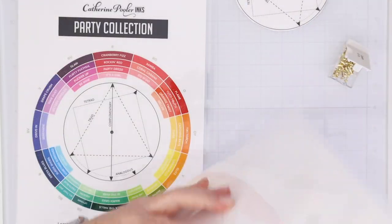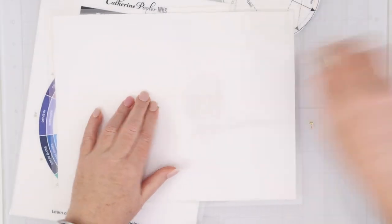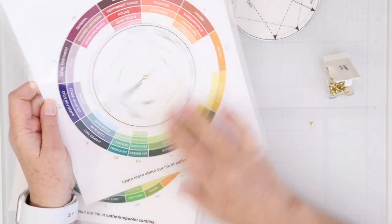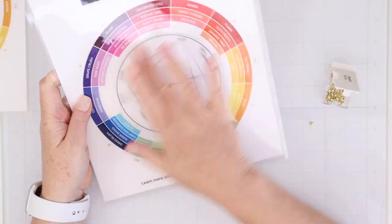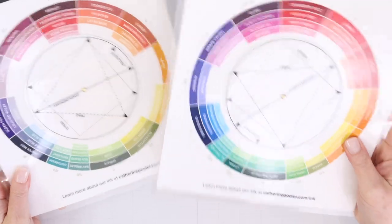Once you get holes in all of the centers, you can just use two brads - one to connect one of the small wheels to the spa collection wheel, and then one to connect one to the party collection. Then you can see how easily it turns, especially because it's laminated and I know it's gonna last me a long time that way. But obviously you can just print it on regular paper if you want.